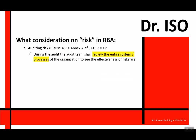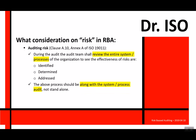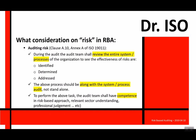There is an annex to that standard, and looking at Clause A-10: during the audit, the team should review the entire system and process to see the effectiveness of the risk — whether it has been identified, determined, and addressed. The risk check should not be a separate element; it should be one audit where you do both the process check and the risk effectiveness check. The key point is the auditor should have the right competence for the risk-based approach, sector understanding, and strong professional judgment.